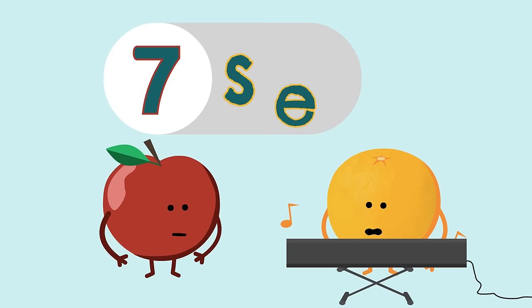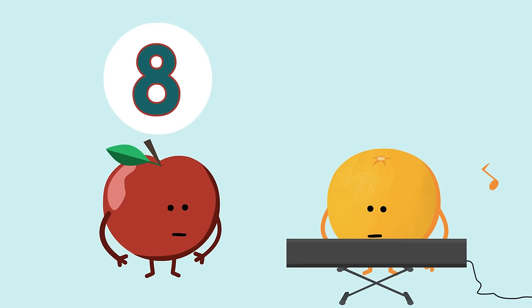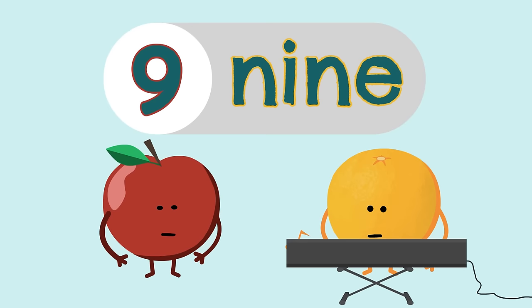So how do you spell seven? S-E-V-E-N. How do you spell eight? E-I-G-H-T. And how do you spell nine? M-I-M-E.